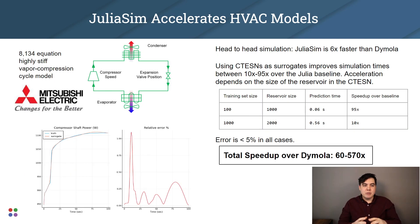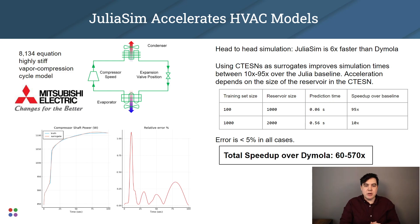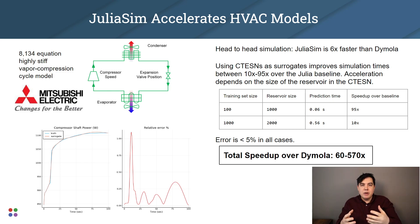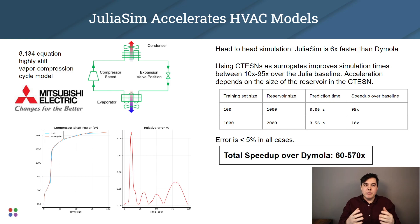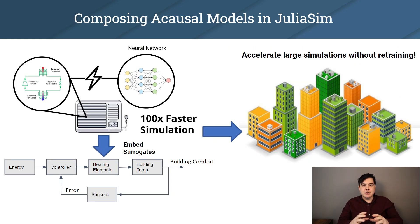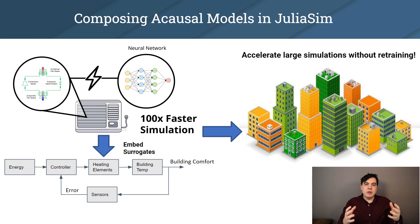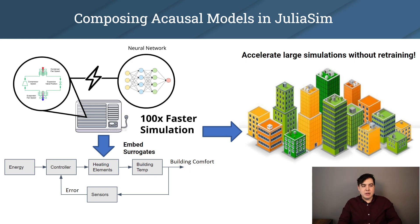We've also shown that we can make use of surrogates — automatically training machine learning versions of models to get faster simulations once trained. For example, on HVAC models we've seen the ability to simulate six times faster than Dymola, the Modelica compiler, and then use the surrogate technology to get to 60 and 570 times faster. We can then compose these surrogate models, taking a componentized version using an acausal modeling framework and use the simulation in different buildings without having to retrain it, getting the full acceleration.